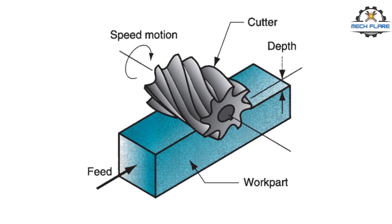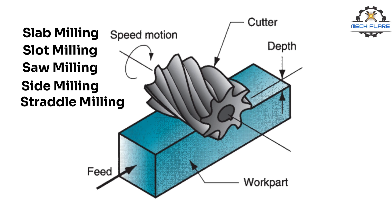Several types of peripheral milling are slab milling, slot milling, saw milling, side milling, straddle milling, and form milling. These will be discussed in detail in future videos.